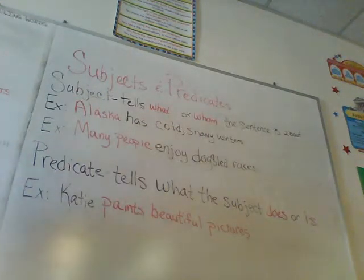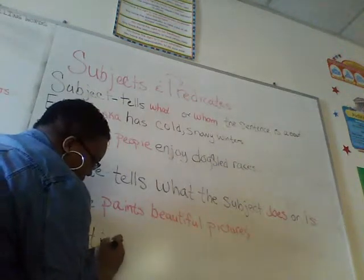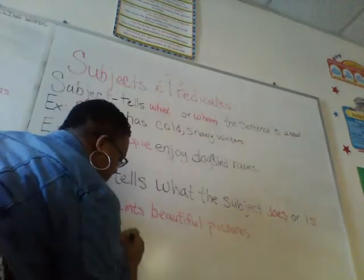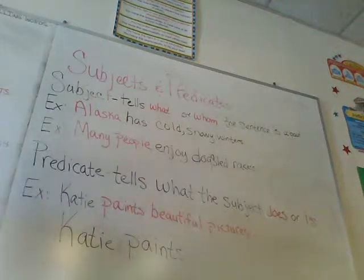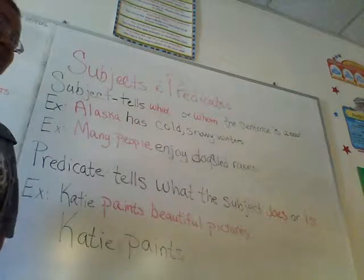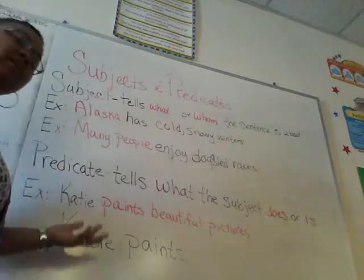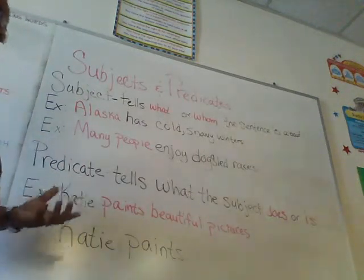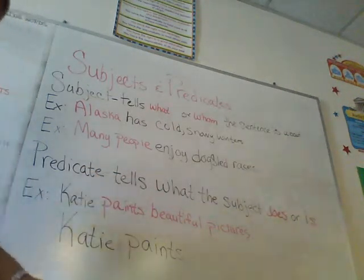Just like with subjects, the predicate of a sentence can be one word or more. If I say 'Katie paints,' what is the subject? Katie — because we're talking about what or whom the sentence is about. Is it about painting or about Katie? Katie. So what would be our predicate? Paints — because it's telling us what the subject does. Good job, understood?